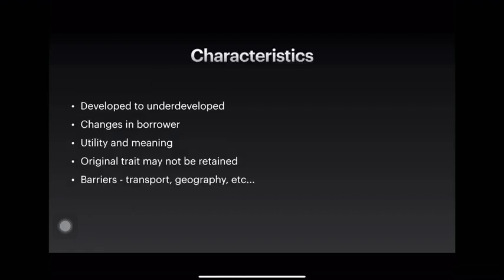Characteristics of diffusionism: Diffusionism occurs mostly from developed to underdeveloped cultures. Changes happen in the culture of the borrower. Culture is accepted only based on its usage and meaning. The original trait of culture need not be retained according to this school of thought. The barriers of diffusionism were considered to be transport, geography, etc.